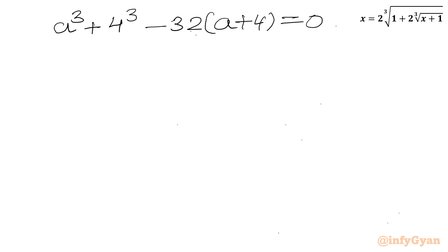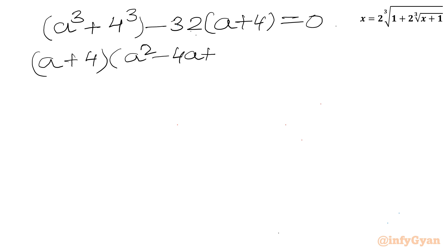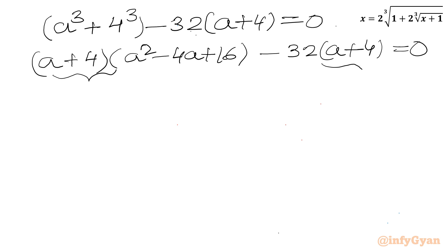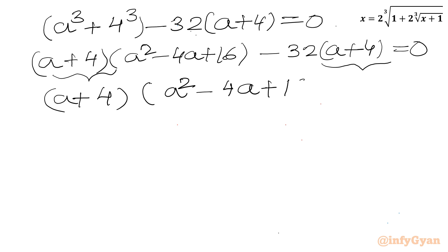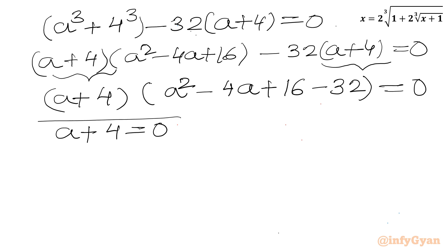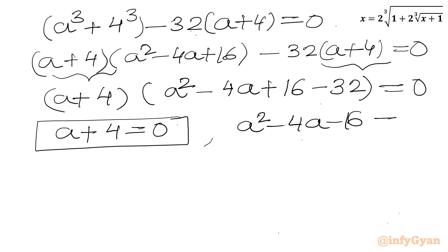Let us apply the algebraic identity. So I can write a plus 4 times a squared minus 4a plus 16, minus 32 times a plus 4, equal to 0. Factoring out a plus 4: a plus 4 times (a squared minus 4a plus 16 minus 32) equal to 0. This simplifies to a plus 4 times (a squared minus 4a minus 16) equal to 0.